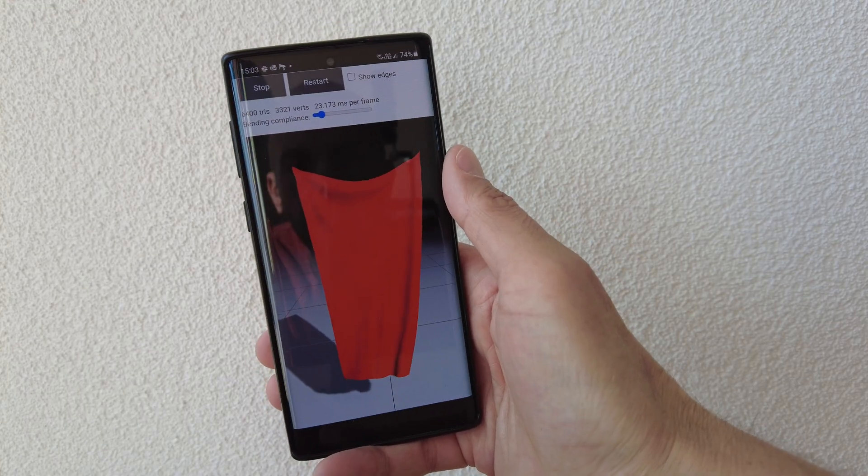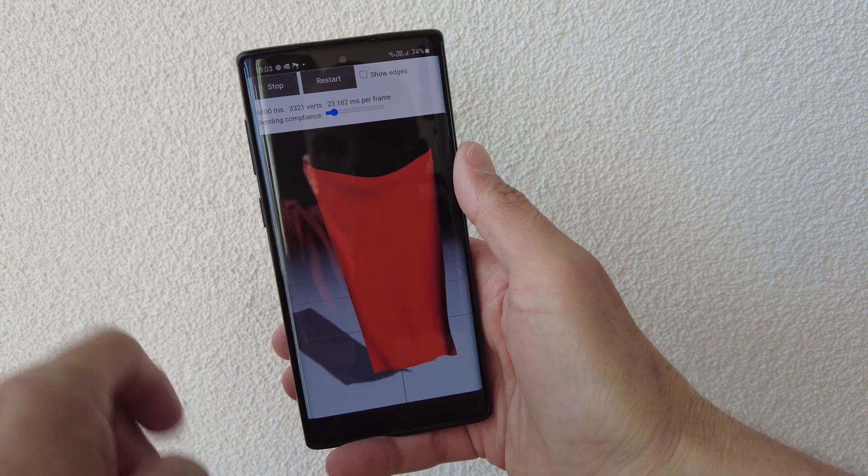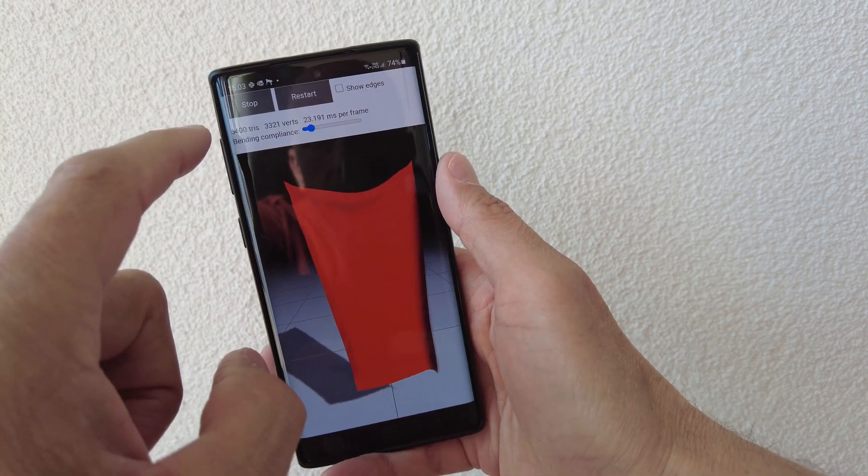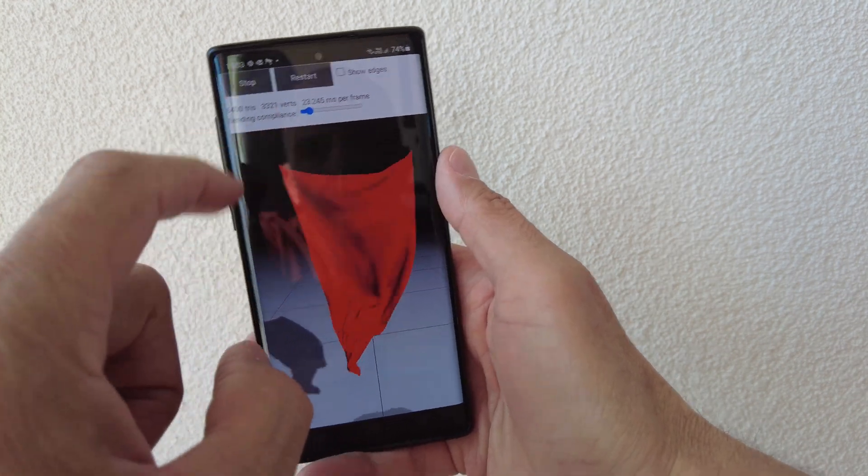This is my Galaxy S10. As you can see, simulating this piece of cloth with over 6,000 triangles takes about 20 milliseconds per frame.